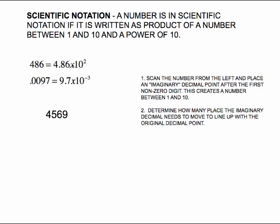This video is on scientific notation. A number is in scientific notation if it is written as a product of a number between 1 and 10 and a power of 10. For example, 4.86 and 9.7 are between 1 and 10, but 486 and 0.0097 are not. So we are taking these numbers and rewriting them so that the first number is between 1 and 10, and the second part is a power of 10.